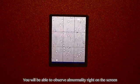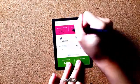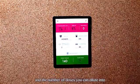You will be able to observe abnormality right on the screen. iSperm can calculate concentration, motility, and the number of doses you can dilute into.